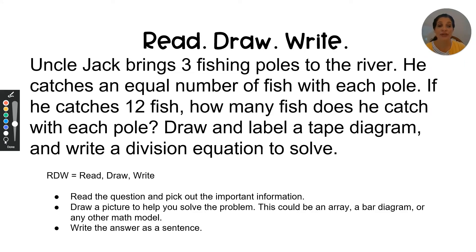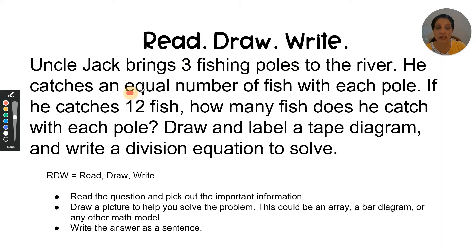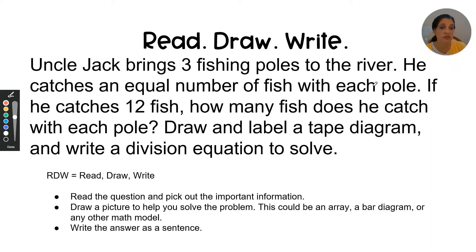I'm going to read the question first and annotate it. Uncle Jack brings three fishing poles to the river — three is a number, and math numbers are always important. He catches an equal number of fish with each pole. So each pole is a group, and we need to know how many fish for each pole. If he catches 12 fish in all, how many fish does he catch with each pole? Draw and label a tape diagram and write a division equation to solve.